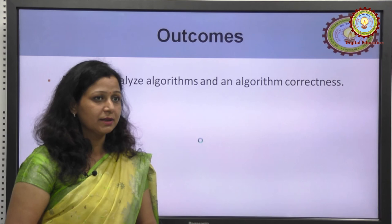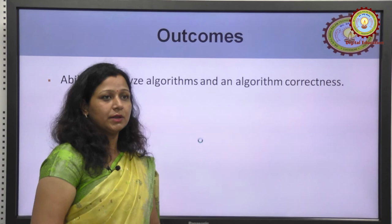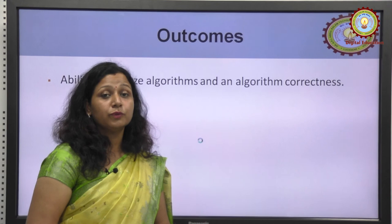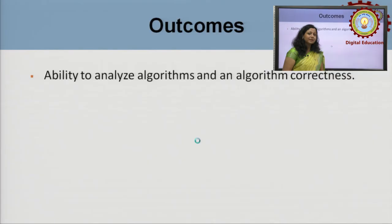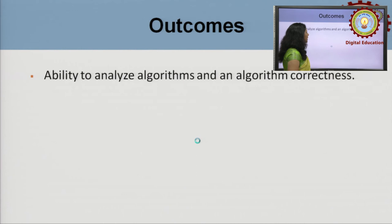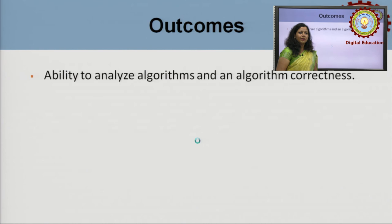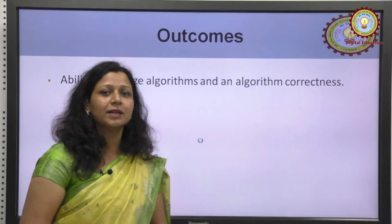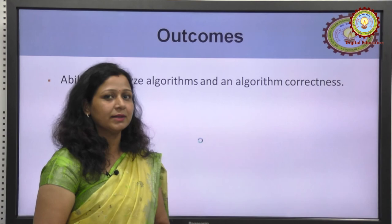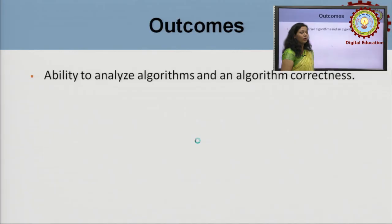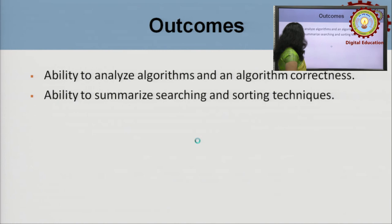After completing this subject, what would you understand — the course outcomes: first, ability to analyze algorithms and their correctness. Once we learn to write sorting algorithms, we will understand their time complexity and space complexity, and which data structure can solve which complex problem. Second, ability to summarize searching and sorting techniques — we will be able to summarize all different searching and sorting techniques.